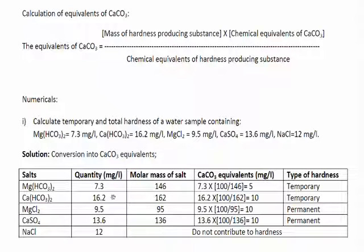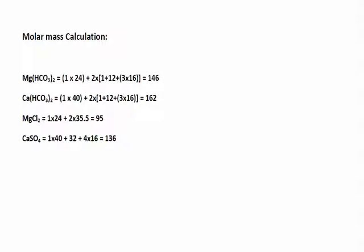Then you have to calculate the molar mass of hardness producing salts. The molar mass or molecular weight of a compound is nothing but the sum of the atomic weights of the atoms which form the compound. In this fashion you can calculate the molar mass of any compound or salt.